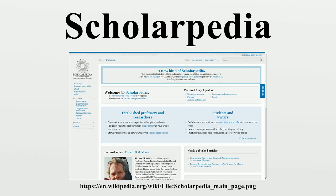Scholarpedia is an English-language online wiki-based encyclopedia with features commonly associated with open-access online academic journals, which aims to have quality content. Scholarpedia articles are written by invited expert authors and are subject to peer review. Scholarpedia lists the real names and affiliations of all authors, curators and editors involved in an article. However, the peer review process is anonymous. Scholarpedia articles are stored in an online repository and can be cited as conventional journal articles. Scholarpedia's citation system includes support for revision numbers.